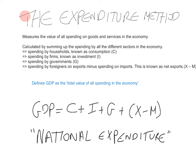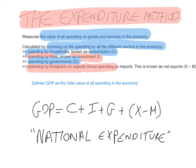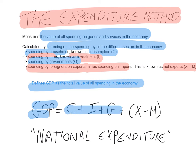The third and final method is the expenditure method, which focuses on the expenditure flow. It measures the value of all spending on goods and services in the economy, calculated by summing spending across all sectors: household spending is consumption, C; firm spending is investment, I; government spending is G; and spending by foreigners on exports minus spending on imports is net exports, X minus M. This defines GDP as C plus I plus G plus X minus M, giving us national expenditure.